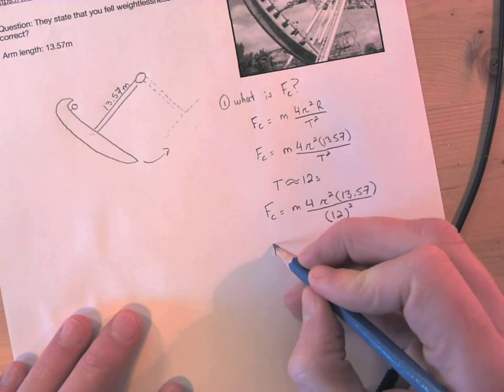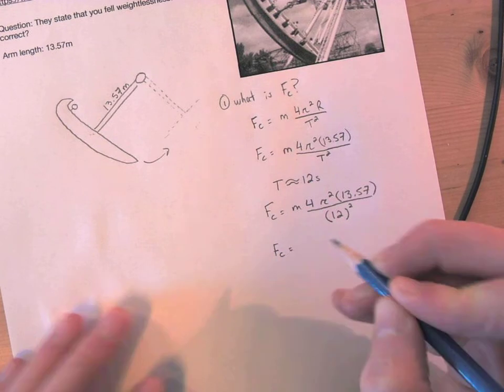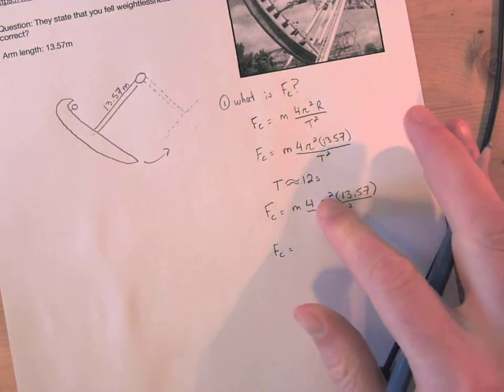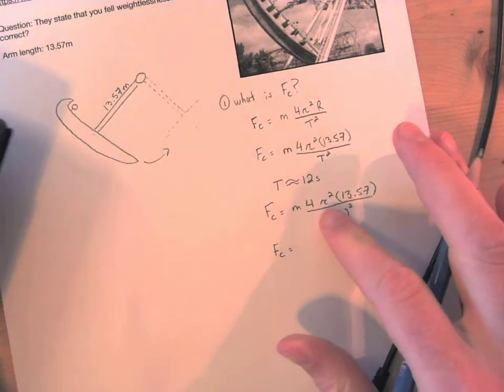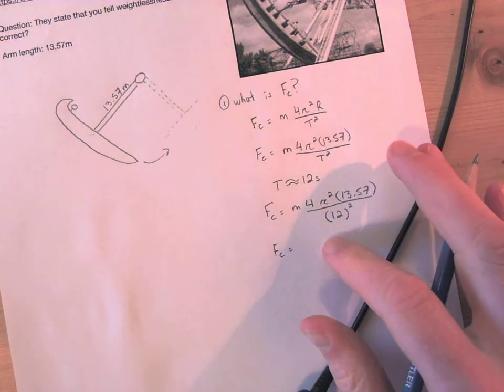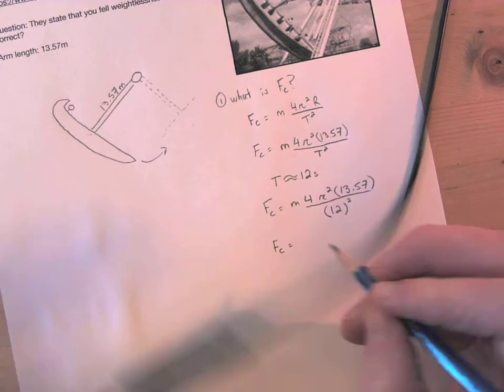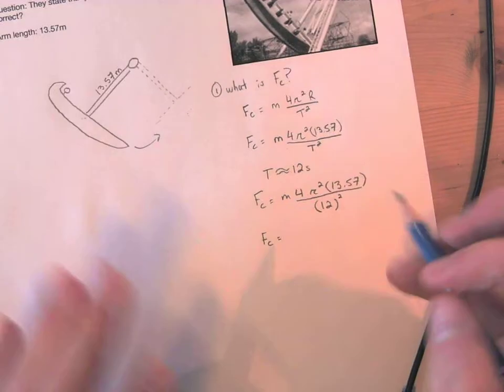Now that we have that we can make it a simpler equation so it's easier to read. So I'm going to type in all this into my calculator: 4 pi squared 13.57 over 12 squared.